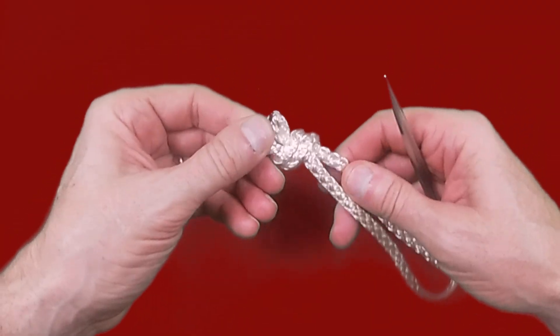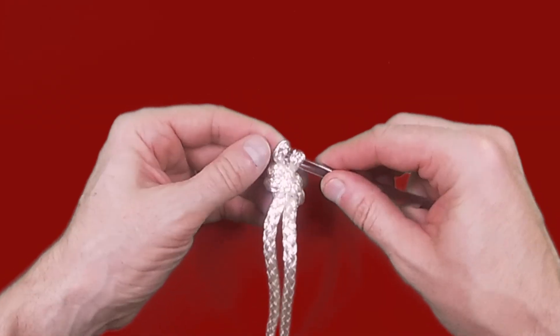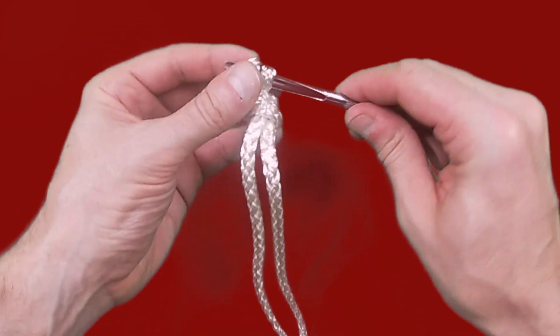To finish off the knot, I'm going to take our fid and place it through the two loops of the Brummel locking splices at the end of the knot.